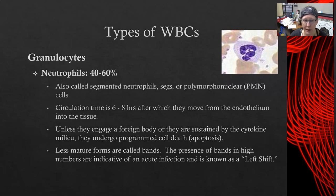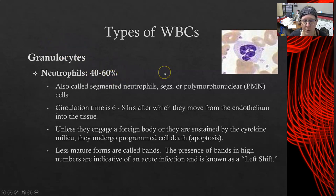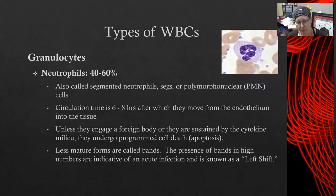You can also see an absolute neutrophil count on the CBC report. To calculate it, take the percentage of neutrophils and multiply by the white count. For example, if a patient's white count is 10 and they have 60 percent neutrophils, the absolute neutrophil count would be 6 times 10 to the 9 per liter.